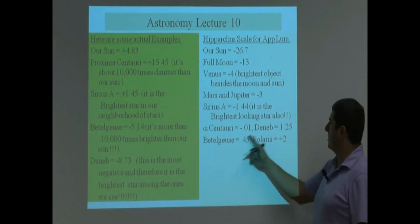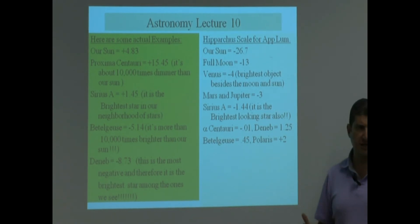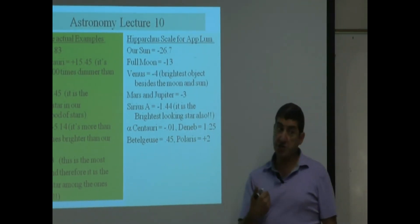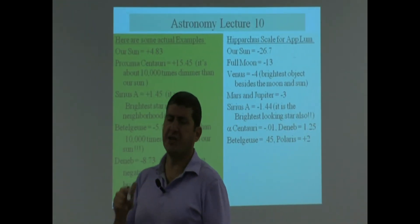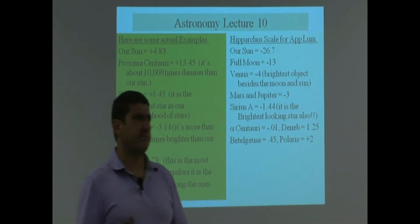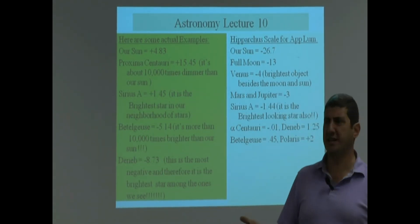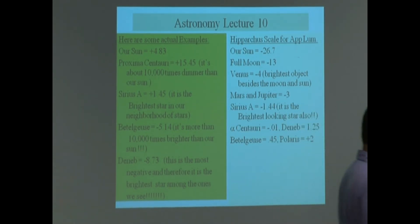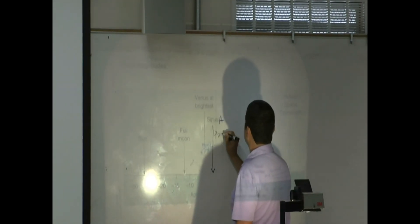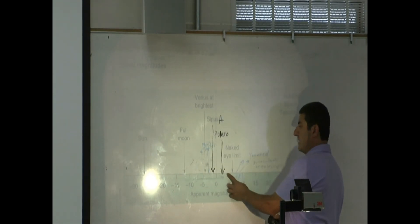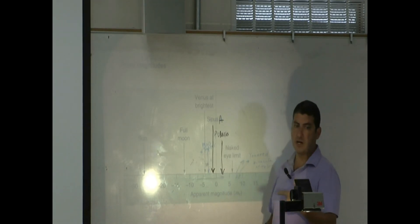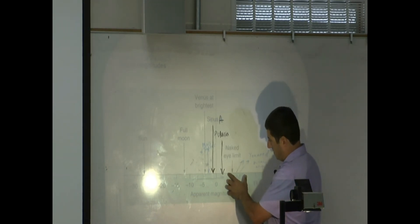Polaris, our North Star, is a positive 2 — it's not very bright-looking, but on a good clear night you should be able to see it at the end of the Little Dipper. As you get more to the right of Polaris on this scale — more positive — it becomes harder and harder to see that star.